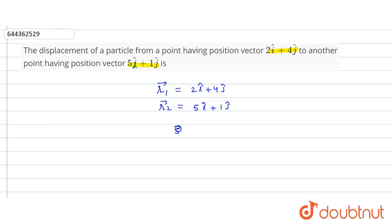We have to find displacement s, which is equal to final position r2 vector minus initial position r1 vector.